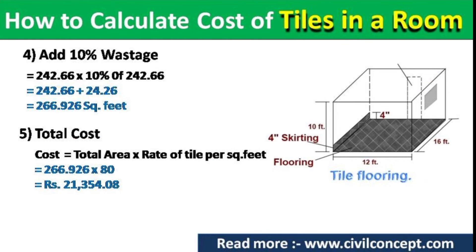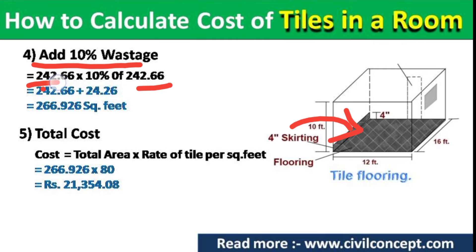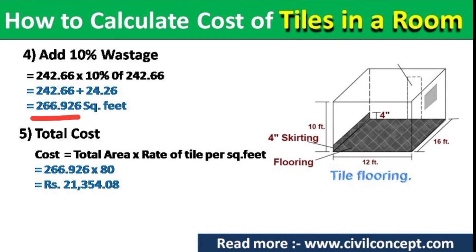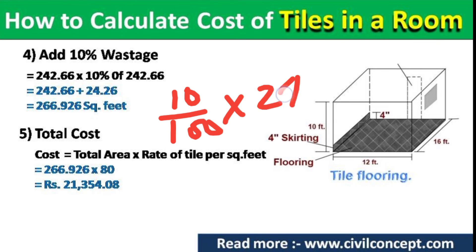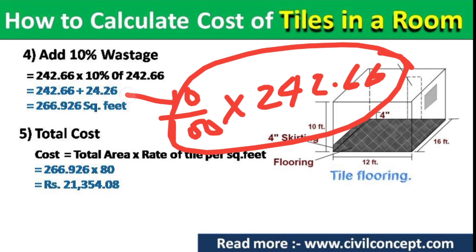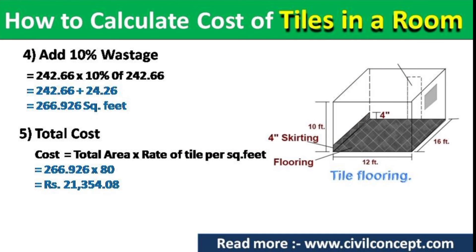In step four, we add a 10% wastage allowance because some tiles may get broken and we need extra. To calculate 10% of 242.66, we multiply 10 divided by 100 by 242.66, which gives 24.26. Adding this to 242.66, the total tile area including wastage is 266.926 square feet.